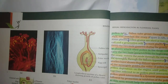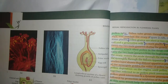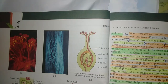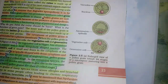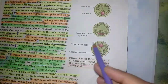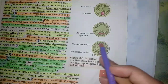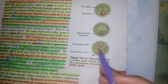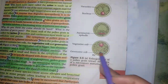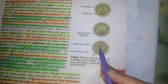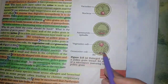When we study pollen grain, we know that in a pollen grain we can find two cell types. One is generative and one is vegetative. In a mature pollen grain, we can find a vegetative cell and a generative cell.